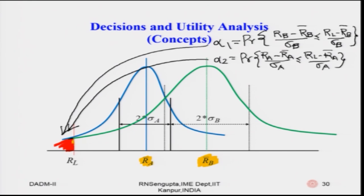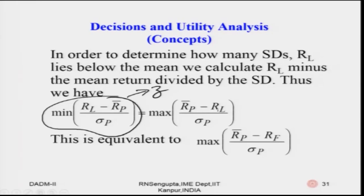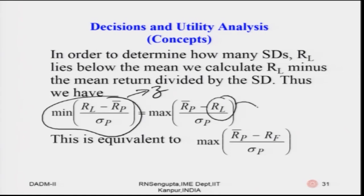Using the standard normal table, to determine how many standard deviations Rl lies below the mean, we calculate (Rl − mean returns). Minimizing (Rl − Rp)/σp is the same as maximizing (R̄p − Rl)/σp. This is equivalent to replacing Rl with RF, the risk-free interest rate, which is the benchmark against which we rank the decision quality. With this I will close the ninth lecture and continue more discussions about the safety first principle in the tenth lecture. Have a nice day and thank you very much.